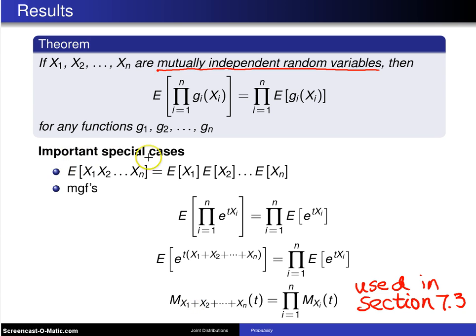So again, two special cases: the expected value of the product is the product of the expected values, assuming mutually independent random variables. And for moment generating functions, the MGF of a convolution is the product of the marginal MGFs.